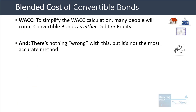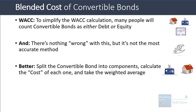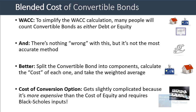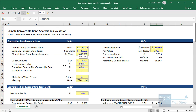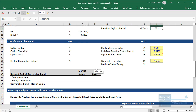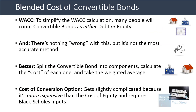There's nothing wrong with that method, but if convertible bonds are very important for a company you're analyzing, it's not the most accurate method. The better method is to split the convertible bond into components, calculate the cost of each component, and then take the weighted average. The cost of the liability component is simple — it's just based on the equivalent rate on non-convertible debt. But the cost of the conversion option is considerably more complicated, because the conversion option is actually more expensive than normal equity and requires inputs from the Black-Scholes formulas.